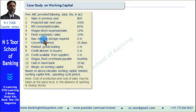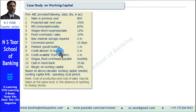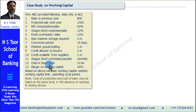Raw material storage required for 2 months. Conversion period: 15 days. Finished goods holding: 1 month. Credit allowed to buyers (customers of the firm): 2 months. Credit available from suppliers: 1 month. Wages and fixed overheads payable on a monthly basis. Cash in hand or with bank: 10 lakh.